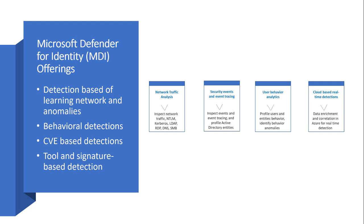MDI also performs behavioral detections, CVE-based detections, tool-based detections, and signature-based detection. It conducts network traffic analysis, security event tracing, and user behavior analytics powered by machine learning. For example, if a user who normally accesses files and services in a certain way suddenly behaves differently, machine learning kicks in and initiates a notification. Real-time detection happens through the cloud, handling all compute requirements automatically.